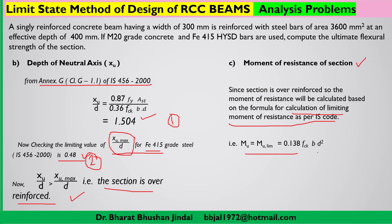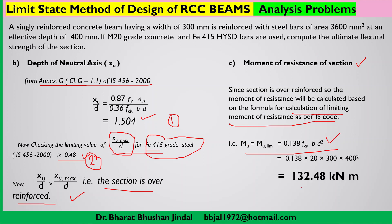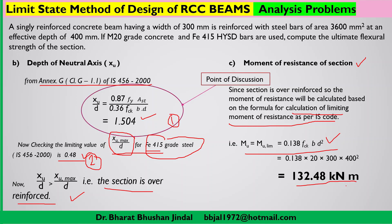Since the section is over-reinforced, the moment of resistance is calculated using the limiting moment of resistance formula. From the table prepared earlier, for FE 415 grade of steel: Mu,lim = 0.138 × fck × b × d². Substituting fck = 20 MPa, b = 300 mm, and d = 400 mm, we get Mu,lim = 132.48 kN·m. This is the moment of resistance of the section.